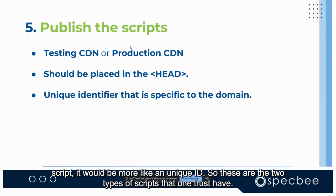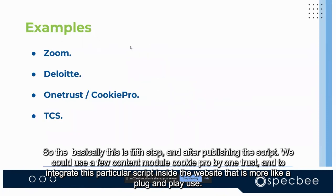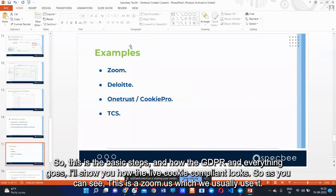The scripts have HTML language support — they detect the lang attribute of the HTML tag and switch the language accordingly. Scripts need to be integrated in the head section of the HTML. Test scripts have a '-test' suffix identifier, while production scripts use a unique ID. After publishing, you can use the CookiePro module by OneTrust to integrate the script into the website as a plug-and-play solution.